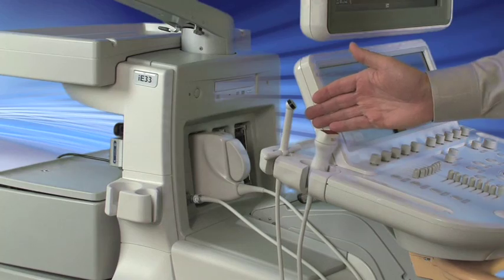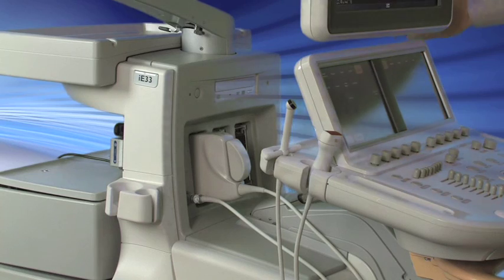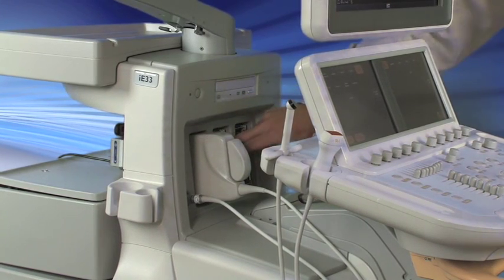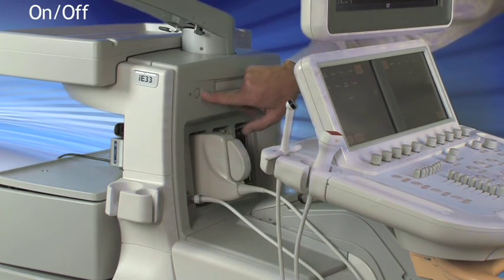There's transducer holders all around the instrument, and in the middle of the system is where you'll find the DVD player, recorder, and your transducer connectors. It holds three, and your CW connector, and the on-off button.